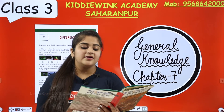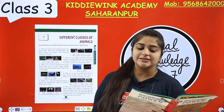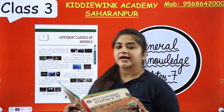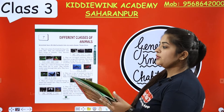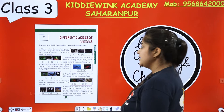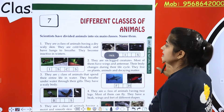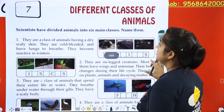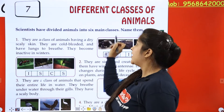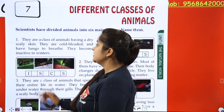Scientists have divided animals into 6 main classes. Let's learn which classes they are and name them. Let's start.